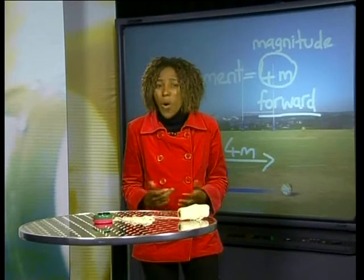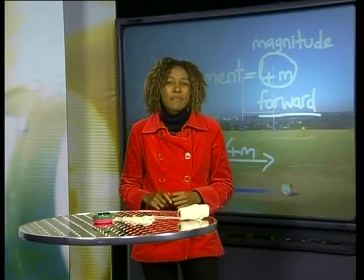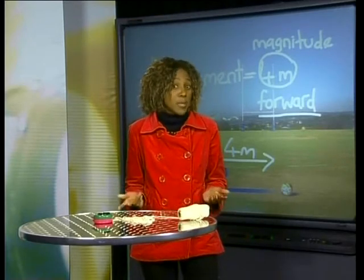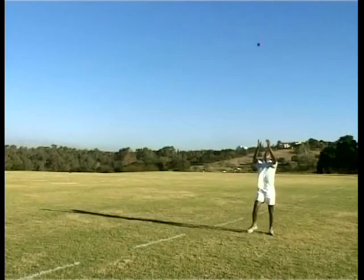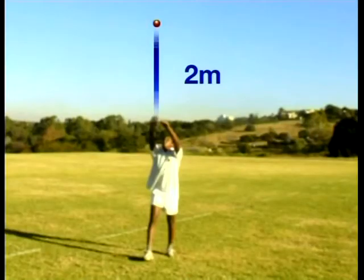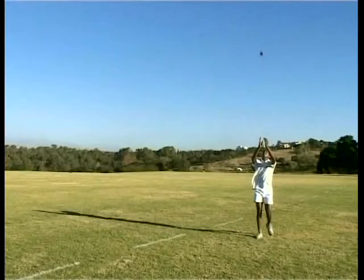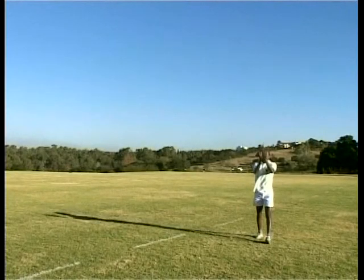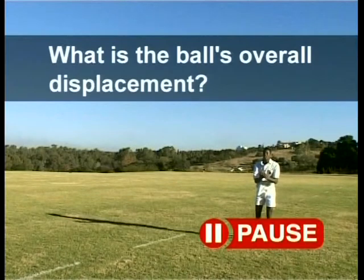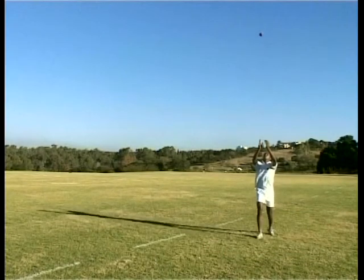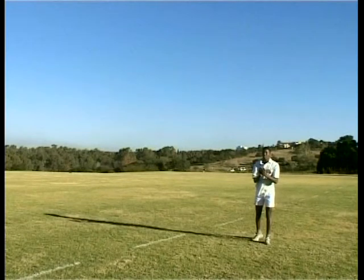You may be wondering why this is so important. Let me explain by showing you another very interesting example of displacement. A cricketer throws a ball up in the air. Its change in position at maximum height is 2 meters up. The ball falls down again and the cricketer catches it in the same position that he threw it from. What is the ball's overall displacement? The ball has returned to its original position, so its overall displacement is 0 meters. There is no change in position. However, this doesn't imply that the ball hasn't moved. All we know from a 0 displacement is that the object has returned to its original position.